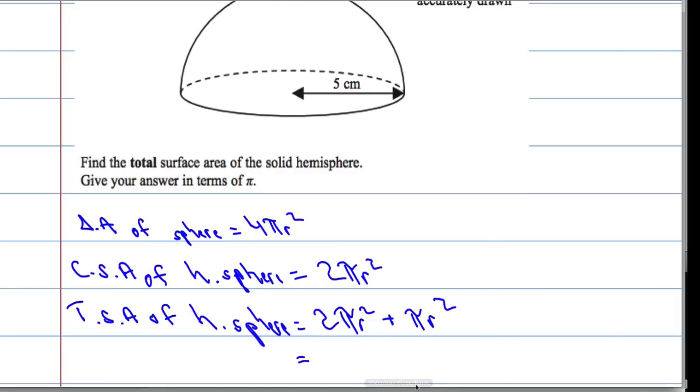So, let's just fill in our numbers here. We've got 2 times pi times r squared, which is 25, plus pi times 25, which is 25 pi.